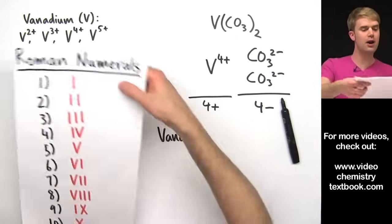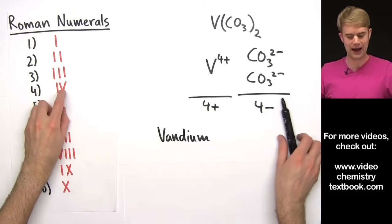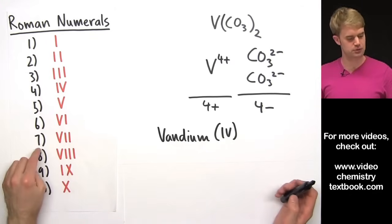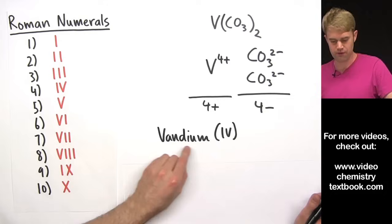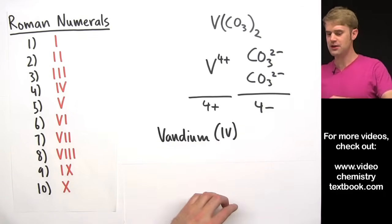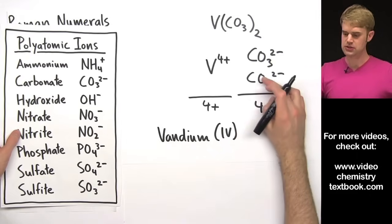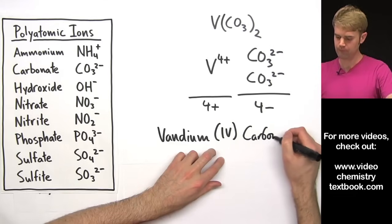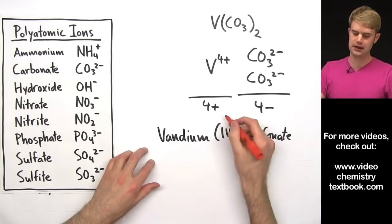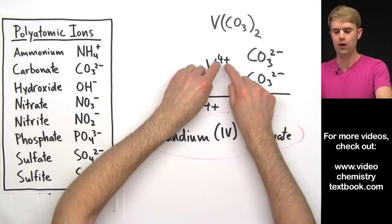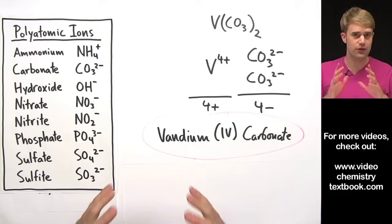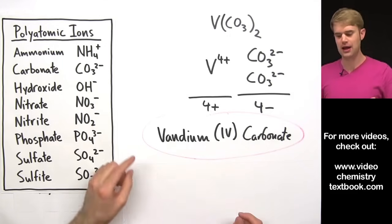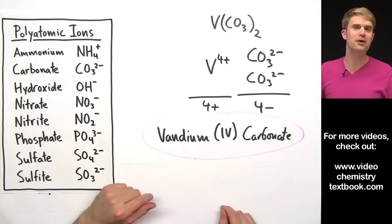So we're going to call this compound vanadium. Now the Roman numeral for 4 might be a little bit unfamiliar to you. It's IV. It's a good idea to memorize the Roman numerals at least up to 7, which is probably like the highest ion you're ever going to see. So vanadium(IV) for 4. And then as we said, this ion, CO3 2-, is carbonate. So the name of this compound is vanadium(IV) carbonate. This 4 is a charge on vanadium. So that is how we take the formula for a compound that contains transition metals and how we write a name for it complete with these Roman numerals.